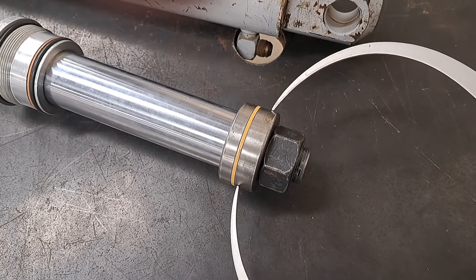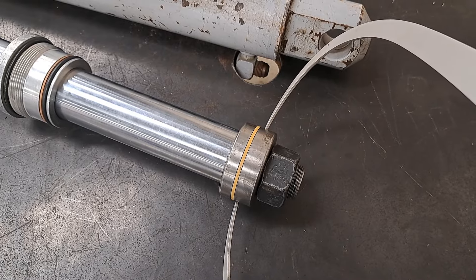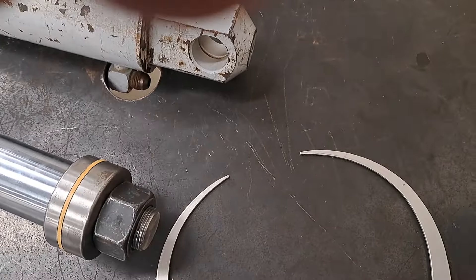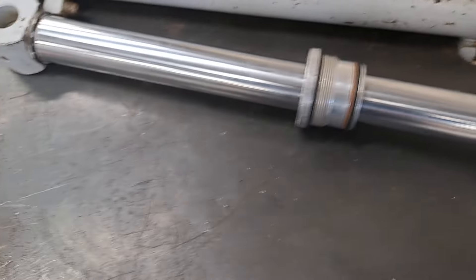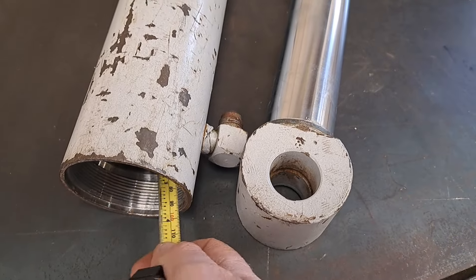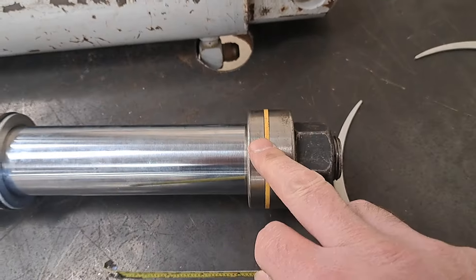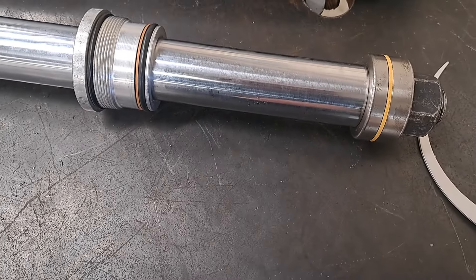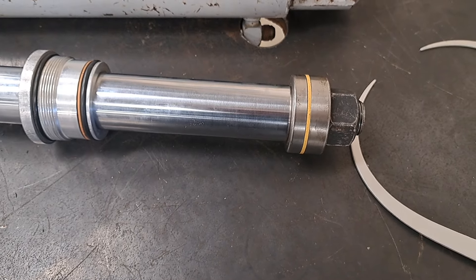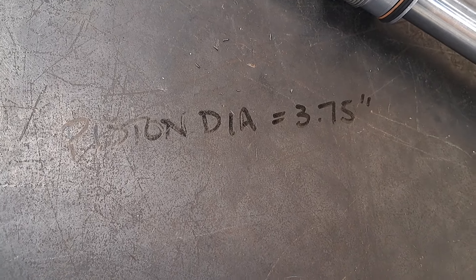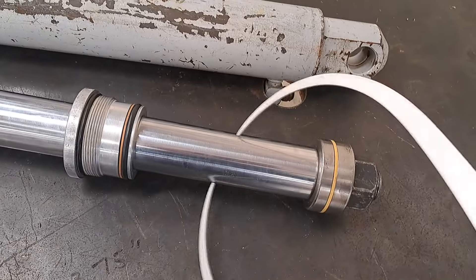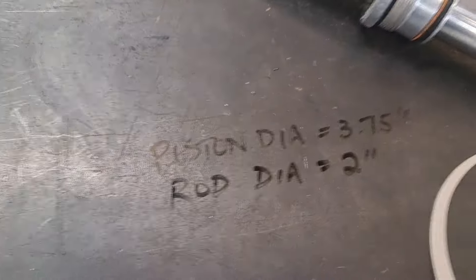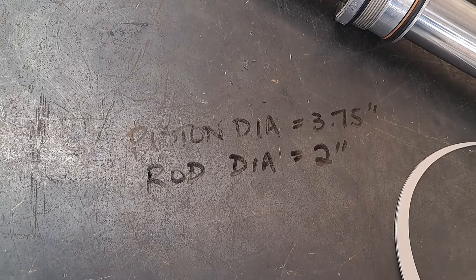To get a more accurate measurement, I'm going to measure the diameter of the piston. I'm not using precision measuring tools here, just a tape measure and caliper. The diameter of the piston — which is effectively the same as the diameter of the bore of the barrel, because the piston seal fits snugly in between — is three and three-quarter inches, so 3.75 inch piston diameter. The rod diameter on this cylinder is 2 inches.